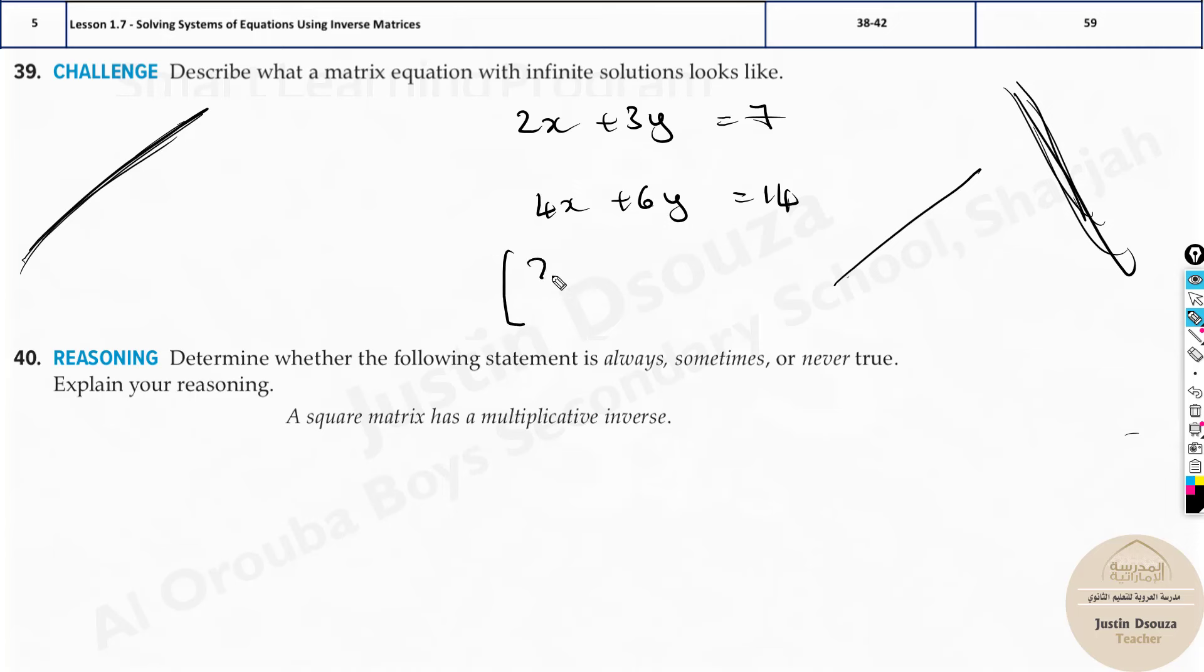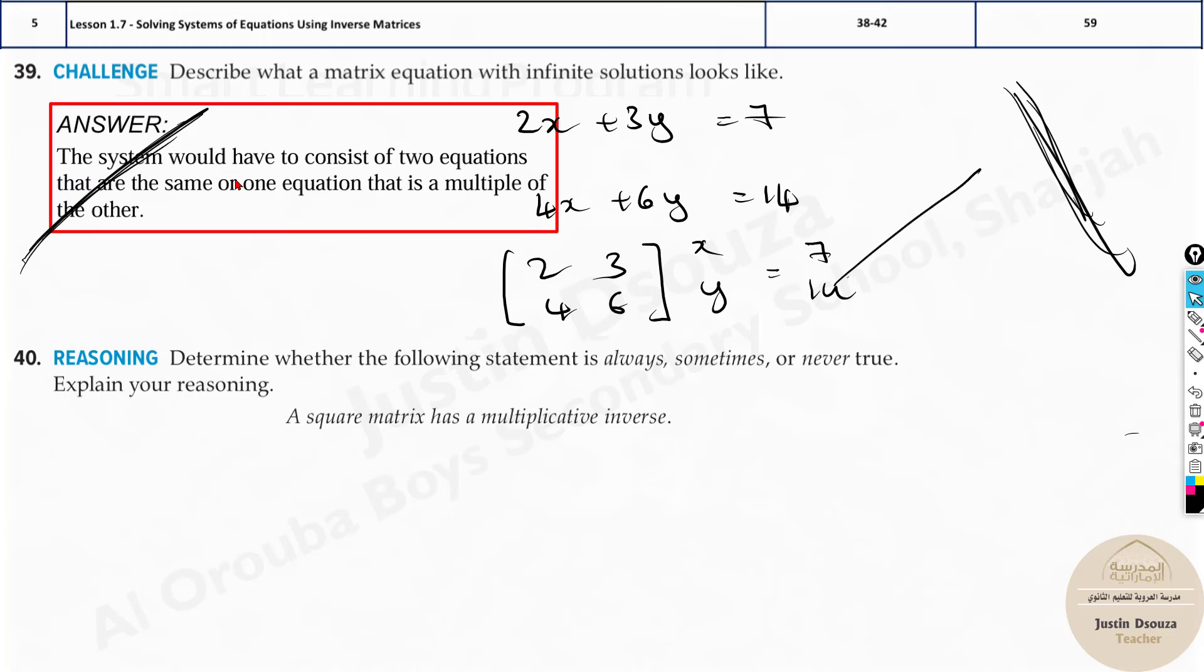Now if you want to write it in matrix form, 2, 3, 4, 6. Over here, x, y, 7, 14. You will have infinite solutions over here. So the system would have to consist of two equations that are same. Or one equation that's multiple of other. Say this is multiple, two times multiple. So that's the answer.